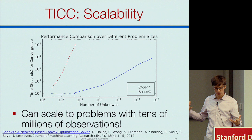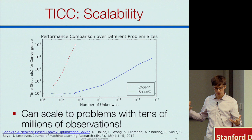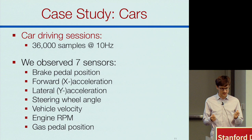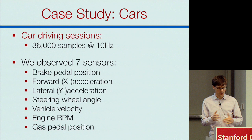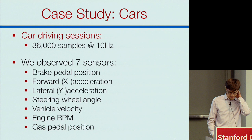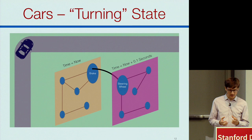Our ADMM solver is open source. As a quick case study, we look at people driving cars. For interpretability, we selected seven sensors from a standard car: brake pedal position, accelerations, steering wheel angle, velocity, engine RPM, and gas pedal position.